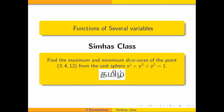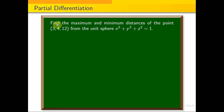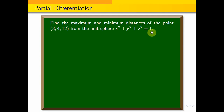This is an example problem: Find the maximum and minimum distance of the point (3, 4, 12) from the unit sphere, x squared plus y squared plus z squared equals 1.